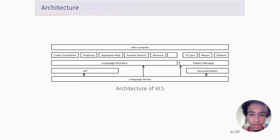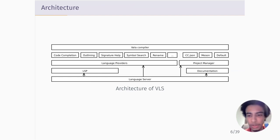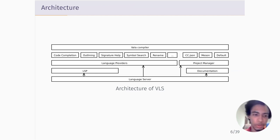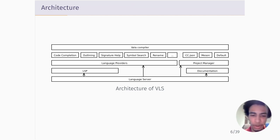Looking at the architecture of the Vala language server, there are basically a number of components. We have a documentation engine, a protocol layer, a project manager which I'll talk about more, and then various language providers for the things you want from a language server, like code completion, outlining, signature help, symbol search, refactoring operations, and so on. All of this is built on top of the Vala compiler.